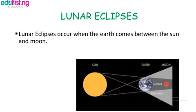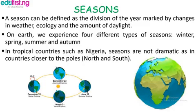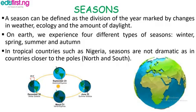The other type is a lunar eclipse, which involves the Sun and the Moon in a different alignment. Let's proceed to seasons. A season can be defined as the division of the year marked by changes in weather, ecology, and the amount of daylight on Earth. We experience four different types of seasons: winter, which is the coldest period of the year; spring, which is a bit warmer; and summer, which is the warmest period of the year, usually between June to August in the northern hemisphere.